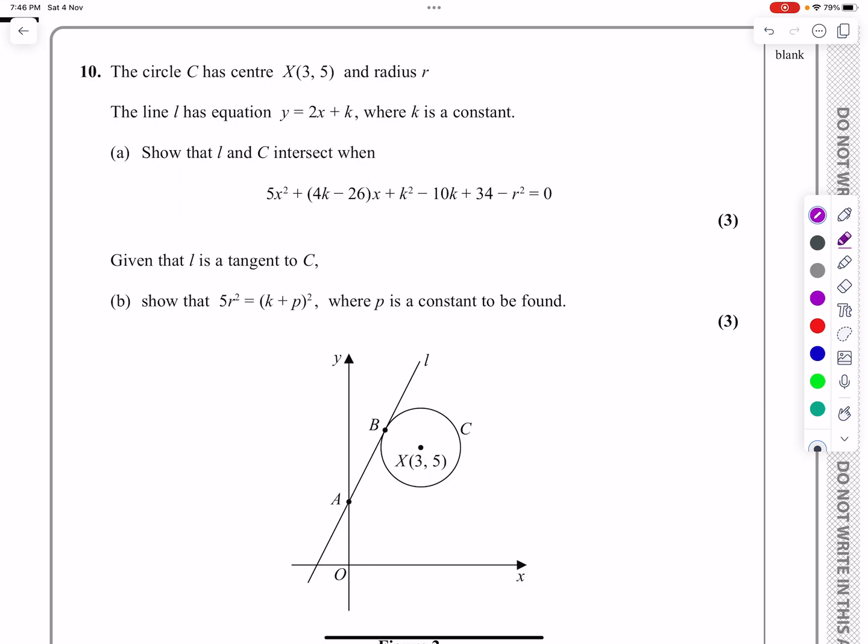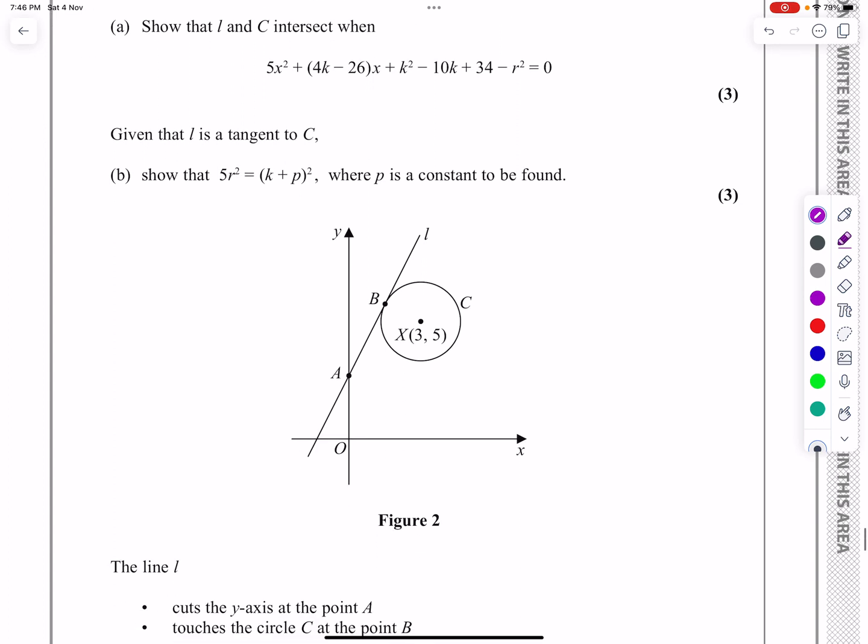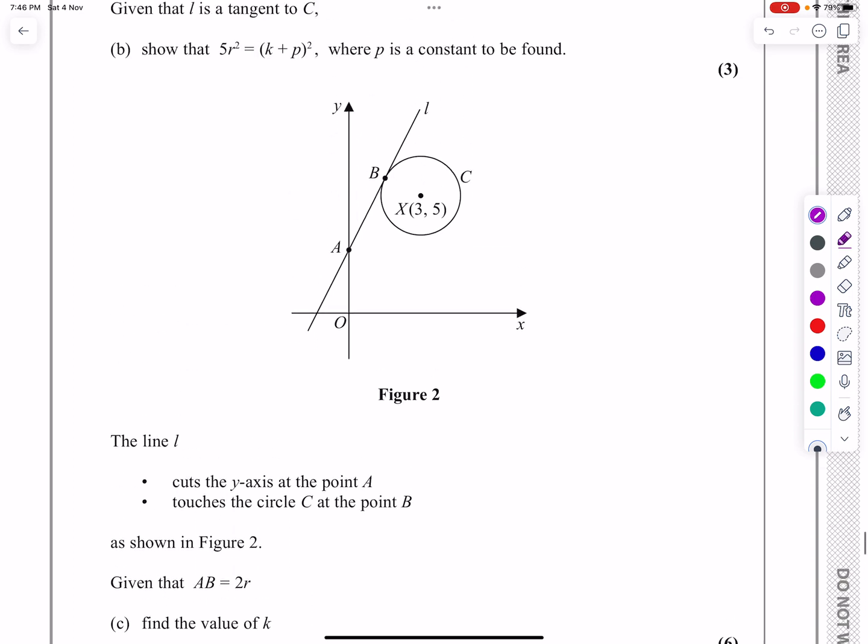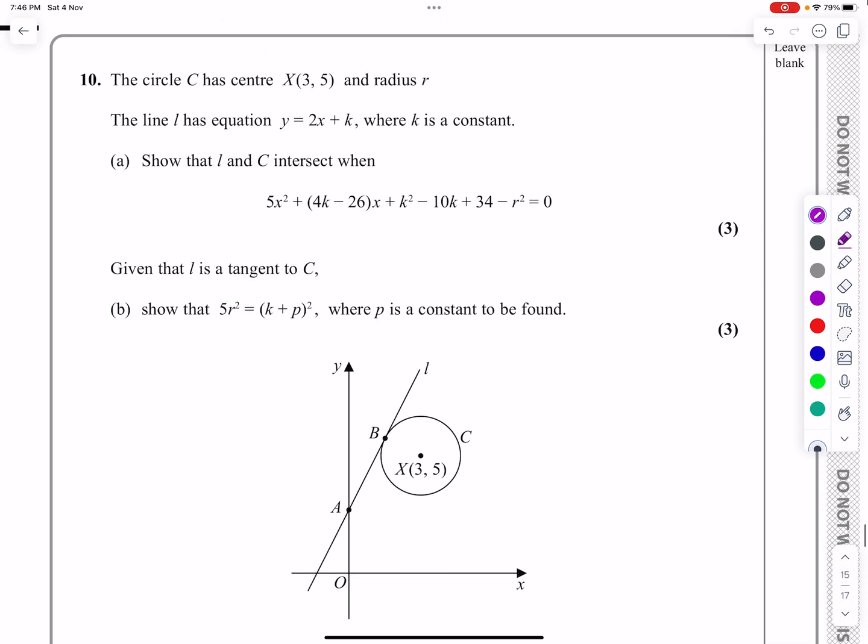Okay, this is the P2 paper from June 2022. This is question number 10, which is the last question on the paper. We can see by looking at it that this is work on coordinate geometry. We're going to be doing some work on equation of a circle and properties of a straight line. Let's have a look and see what they've given us.